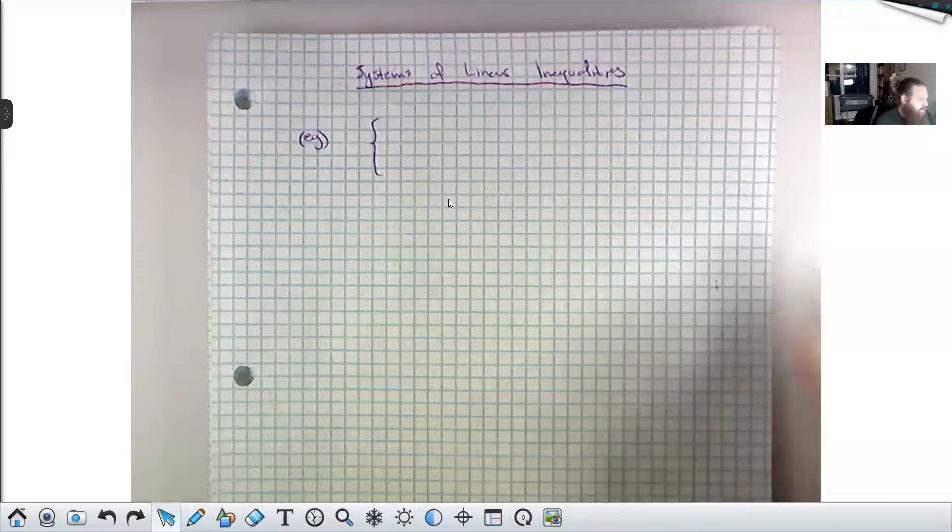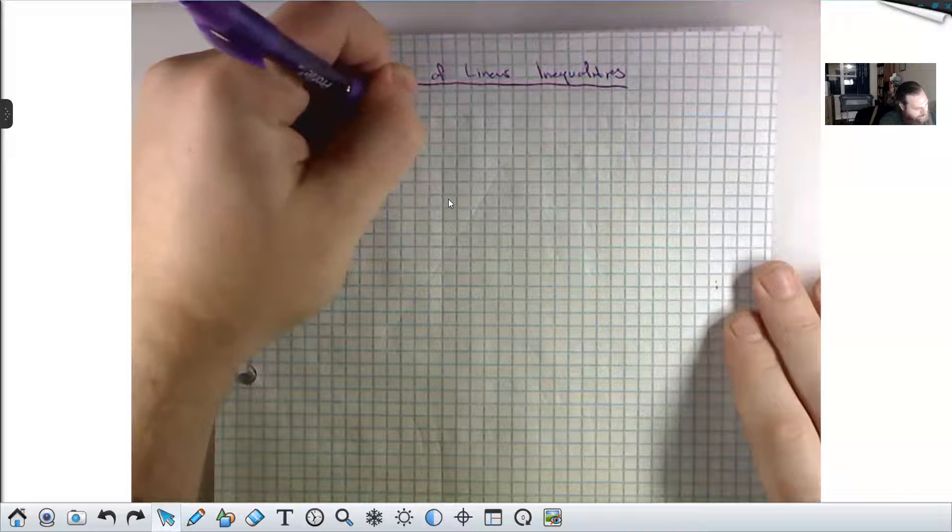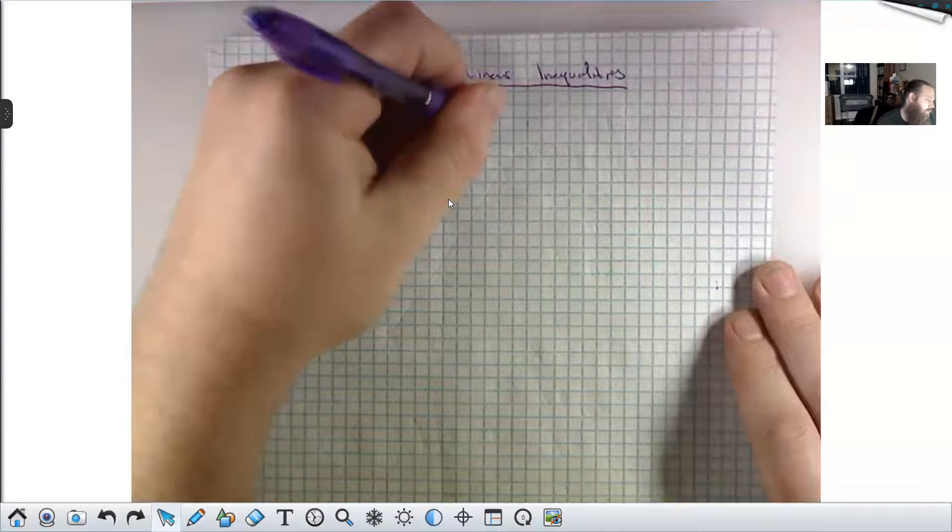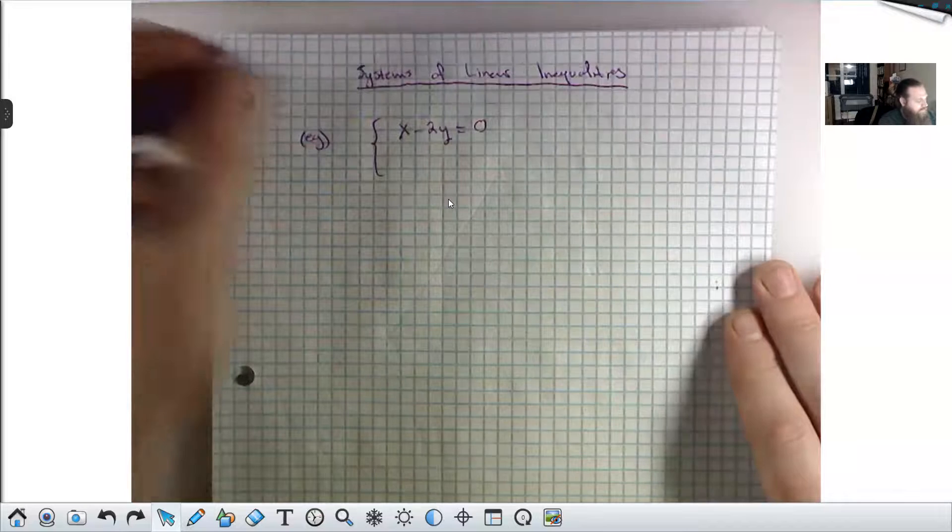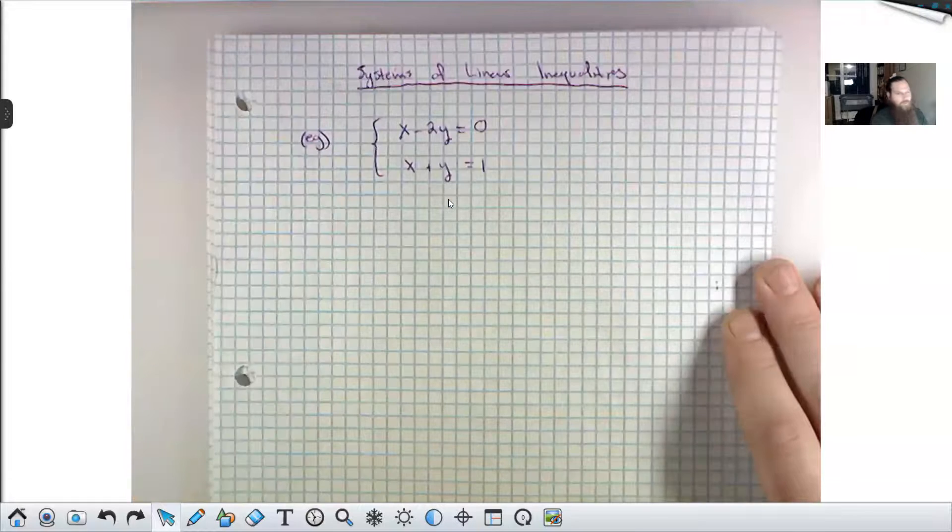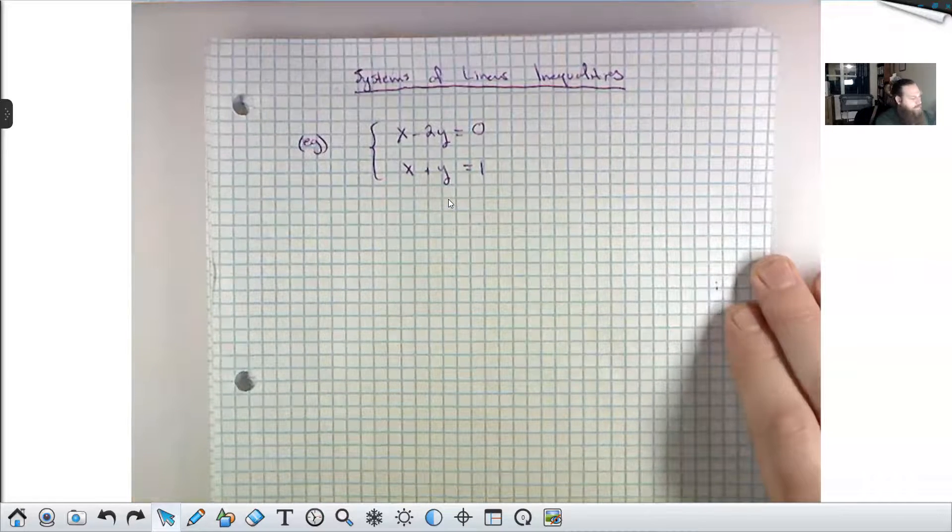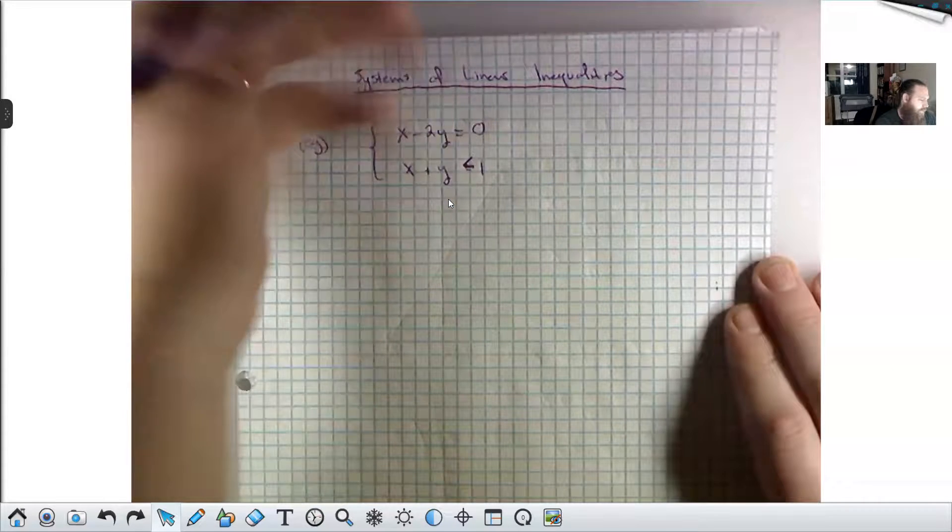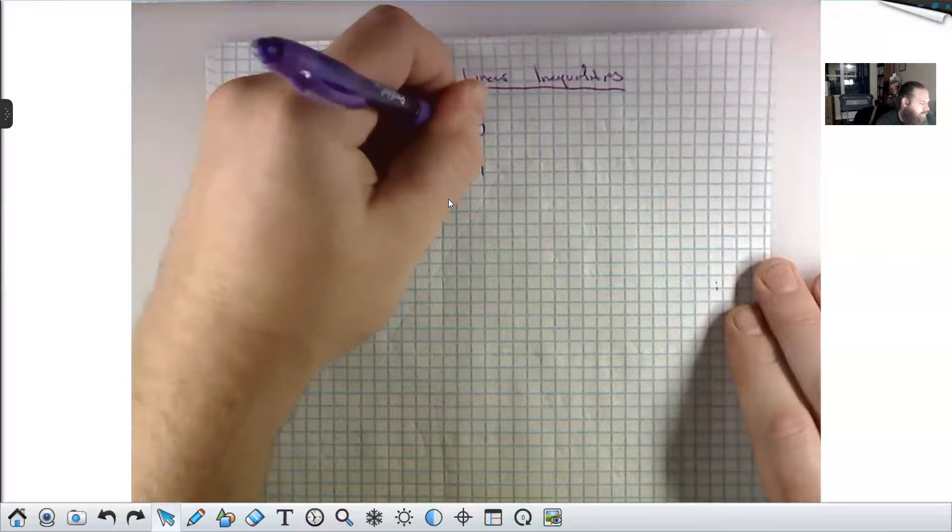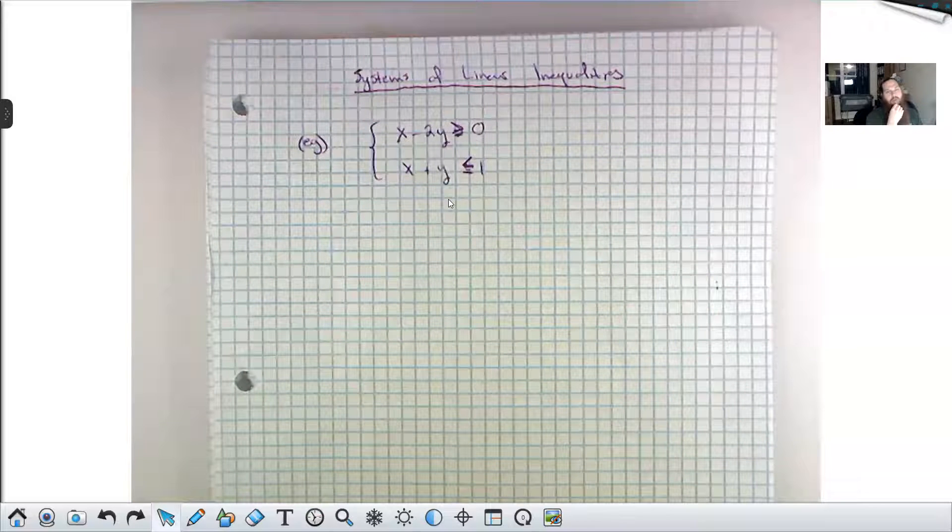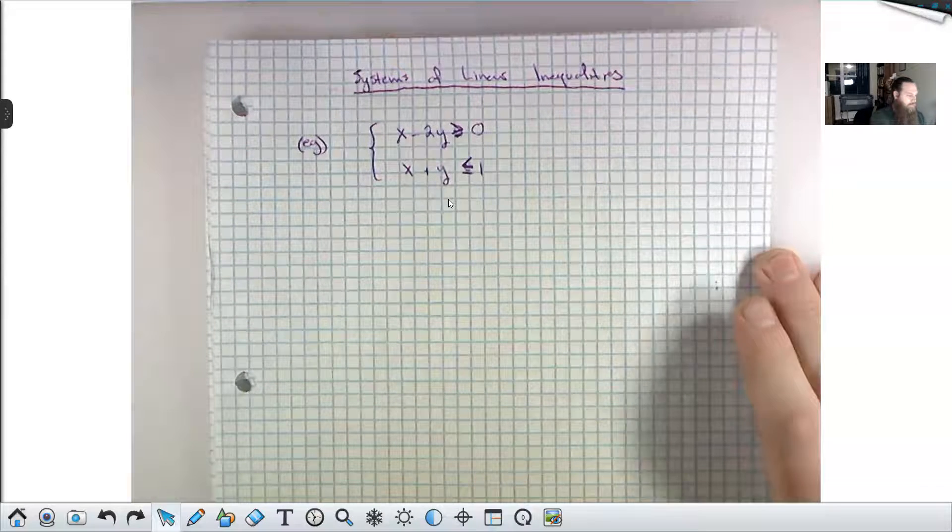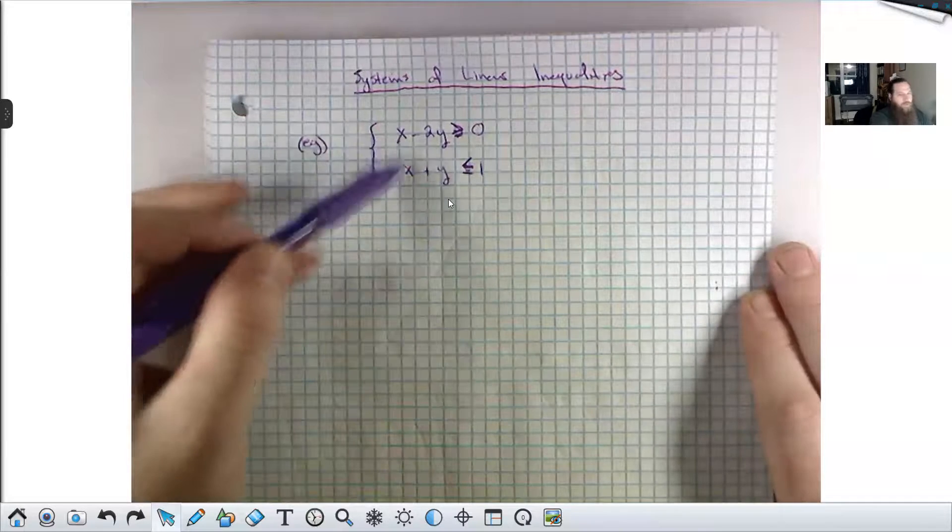I can just show you this through examples. Let's take something like x minus 2y equals 0 and x plus y equals 1. This would be a system of linear equations. If I want to think about a system of linear inequalities, I could give it to you like this. And maybe this one is greater than.